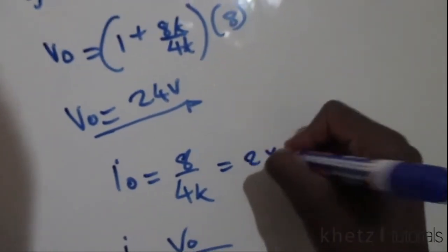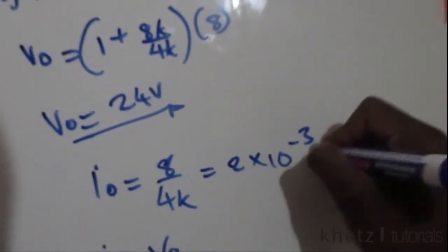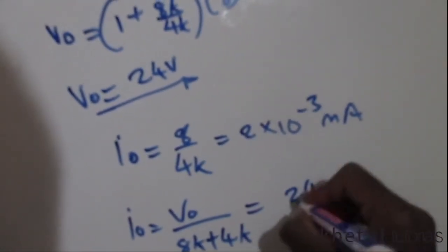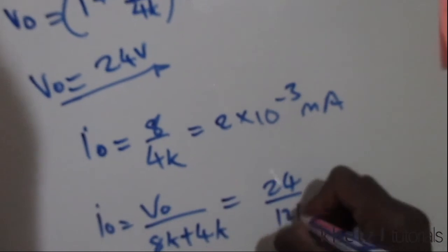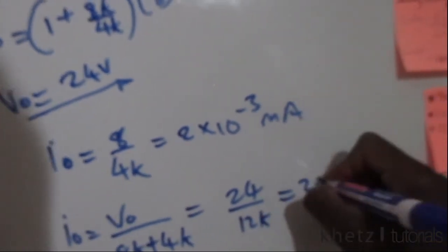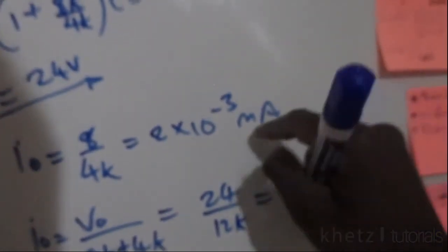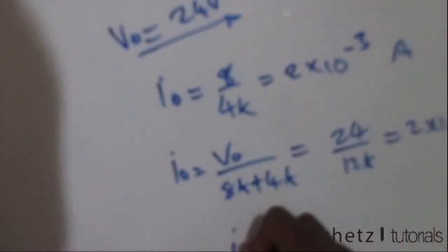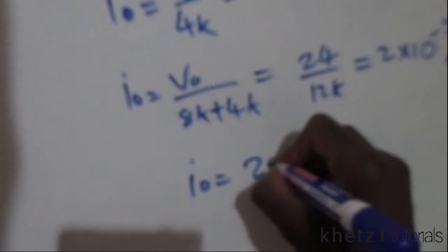Which should be 2 times 10 to the minus 3 milliamps. This same thing applies because you're going to have 24 divided by 12k, which is going to give you the same answer, or IO equals 2 milliamps.